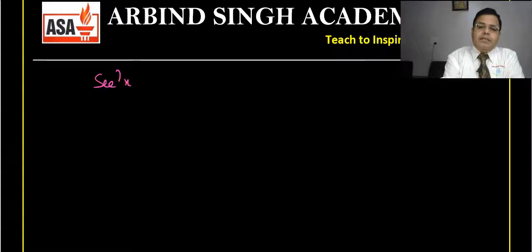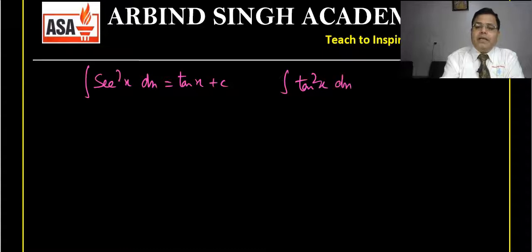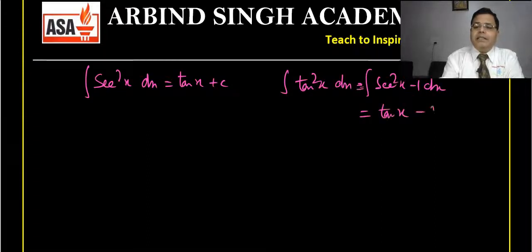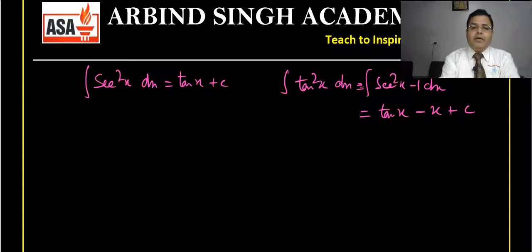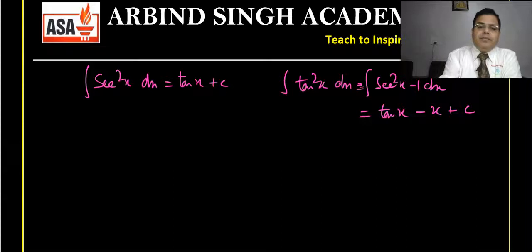Another transformation example: ∫tan²x dx. Since tan²x = sec²x − 1, we can write ∫tan²x dx = ∫(sec²x − 1)dx = tan x − x + C. So functions that cannot be integrated directly can often be transformed into integrable forms.